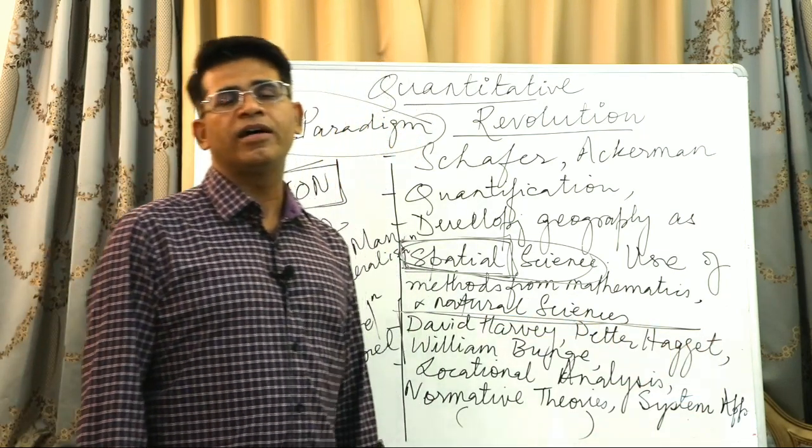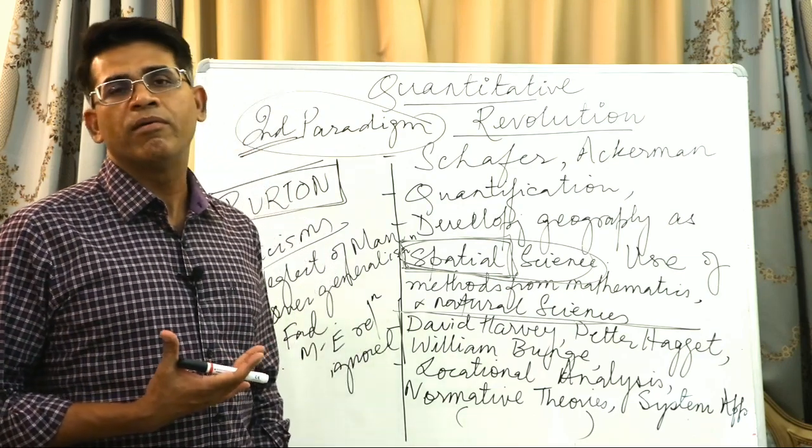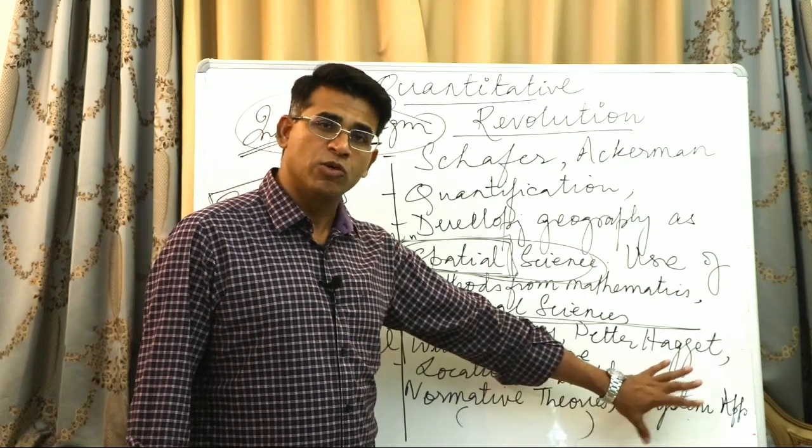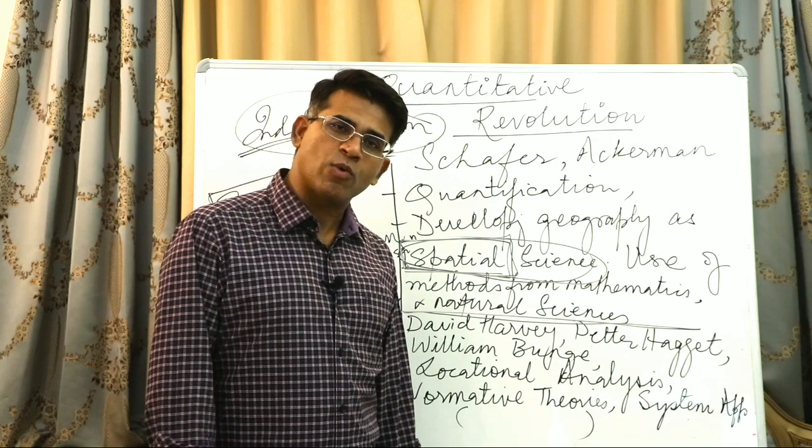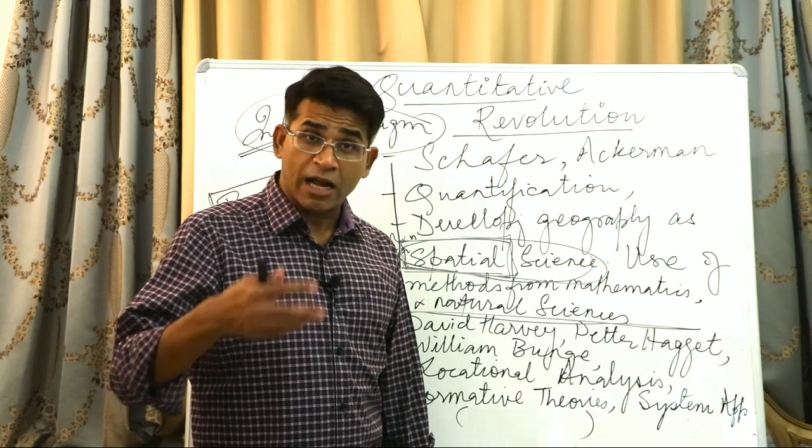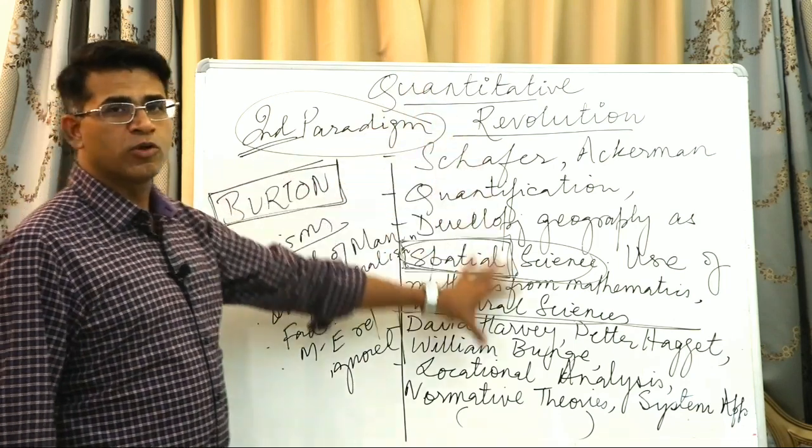Systems approach—the works of BGL Berry and Richard Chorley, they came up with kinds of systems and used these models in human geography. A lot of systems analysis was done for urban studies in particular.